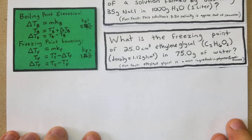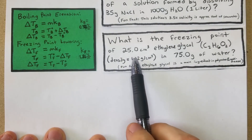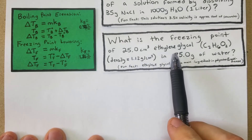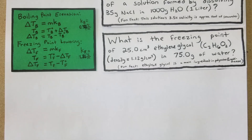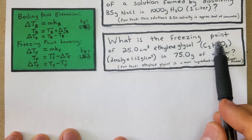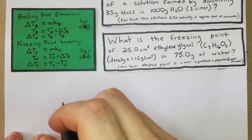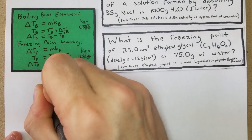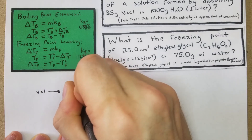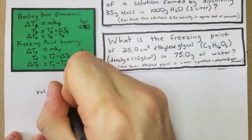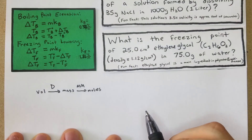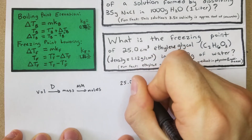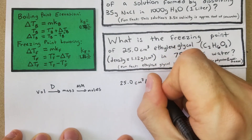Last problem: what is the freezing point of 25 cubic centimeters of ethylene glycol — given its density — in 75 grams of water? Ethylene glycol is used in making polyester but also in antifreeze, making it a significant example for freezing point lowering. As a roadmap: to go from volume to mass we use density, and from mass to moles we use molar mass. We have 25.0 cm³ of ethylene glycol.